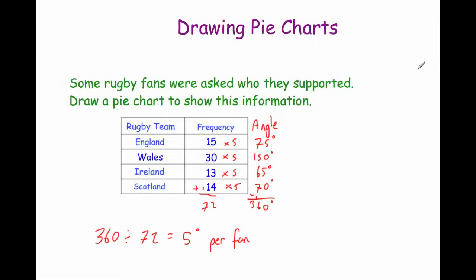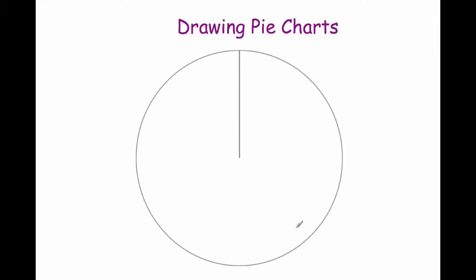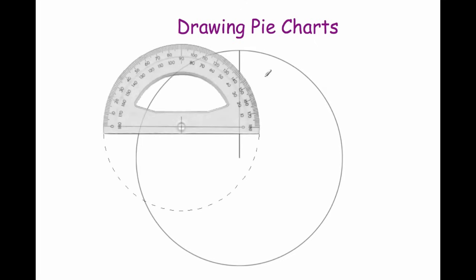So now we're going to draw the pie chart. Typically a circle will be drawn for you with a line going from the centre to the top of the circle. To draw the pie chart you're going to need a pencil, a ruler, and a protractor. You can use a 180-degree protractor or a 360-degree one — whichever you prefer.